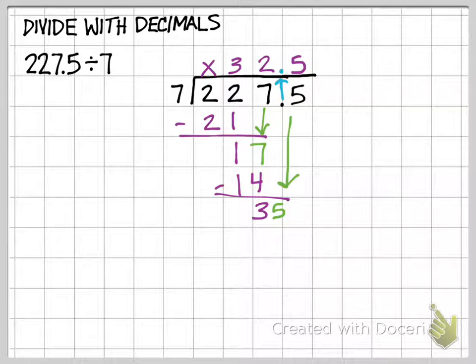Dividing decimals is very similar. The only thing you have to be conscious of is moving the decimal point. If you have the decimal point in the dividend and the divisor, then you need to move it the same number of times.